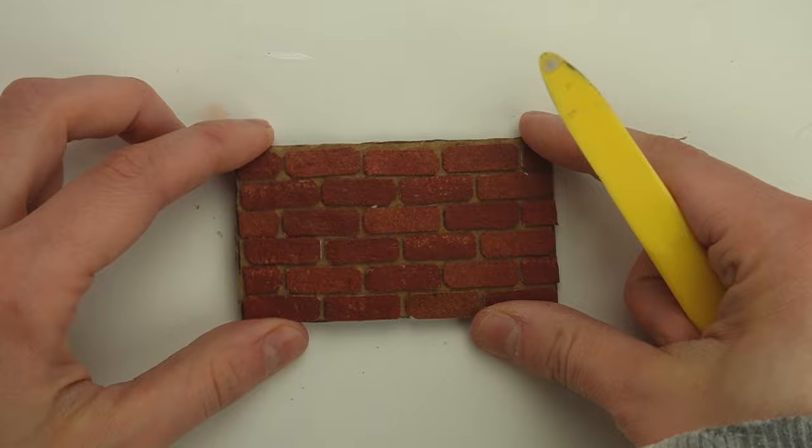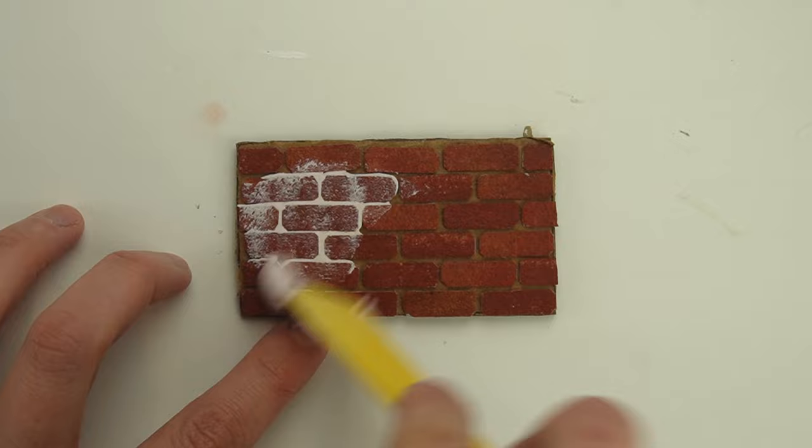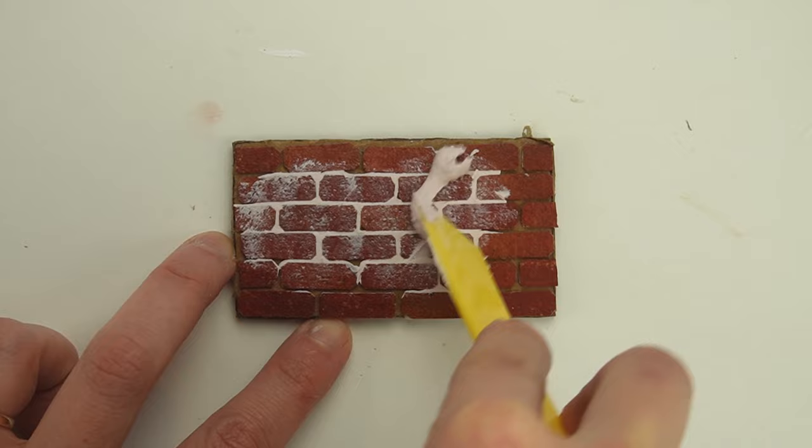The Mod Podge is dry and now I'm adding some grout in between the bricks. I'm using a little plastic spatula and squishing the spackle directly in between the bricks and scraping most of it off of the surface.